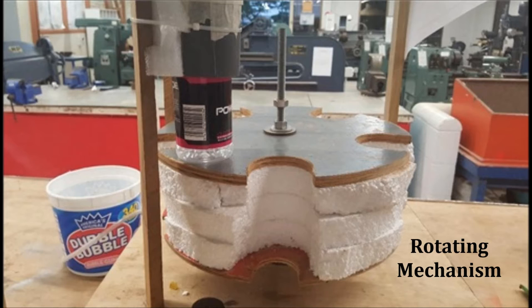The rotating mechanism in the system transfers the bottles to each stage of the machine. It also utilizes a DC motor but is only powered at 2 volts.